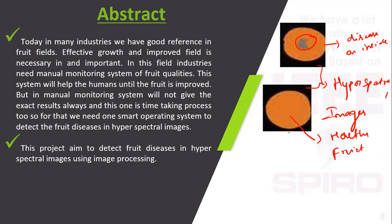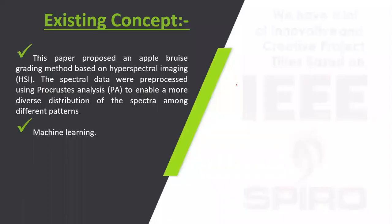In this project we are using MATLAB image processing in order to detect the fruit quality on the inside of the food. In the existing system, they are using machine learning techniques to detect fruit disease.